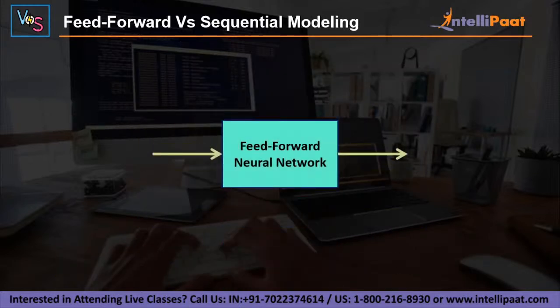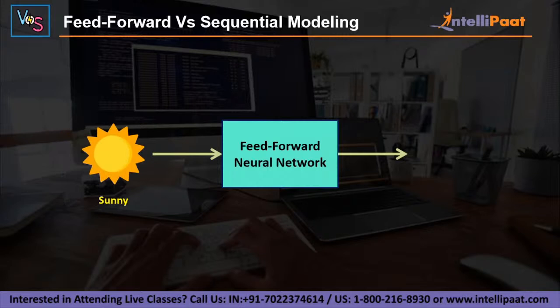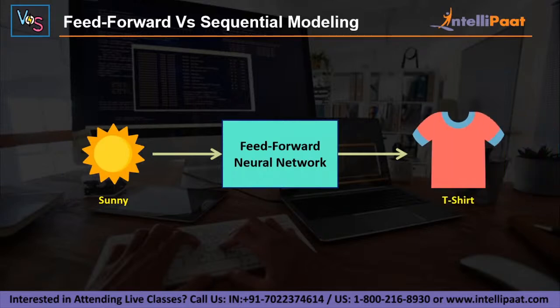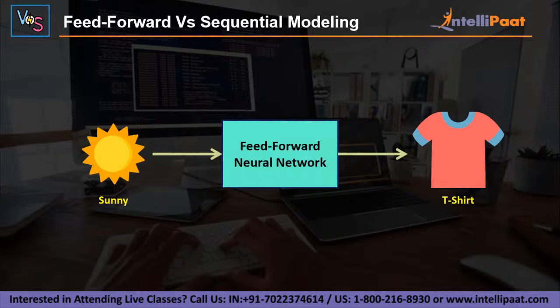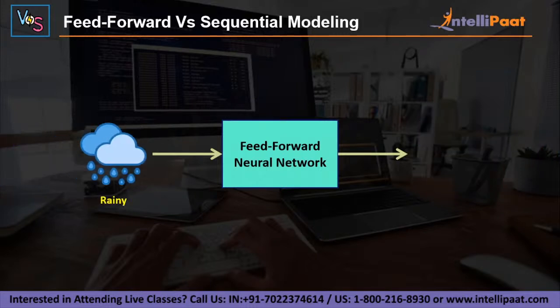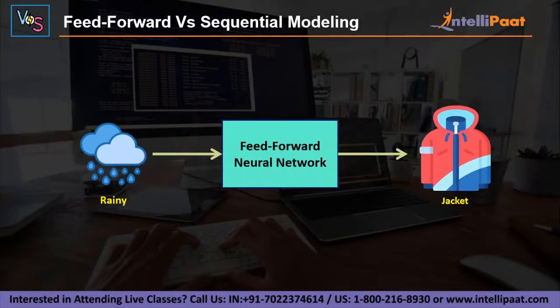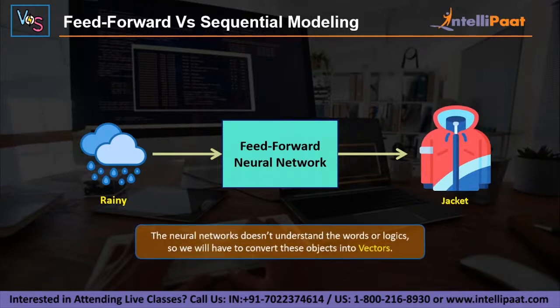Coming back to our simple neural network modeling, the decision for Rachel will be completely dependent on weather conditions. If we provide a sunny weather input, the resultant output our model should return is t-shirt. On the contrary, if the input is rainy weather, Rachel should wear a waterproof jacket. This logic is easy for the human brain to process, but that's not the case with neural networks — we have to convert these textual terms into numbers.